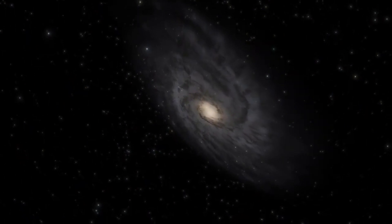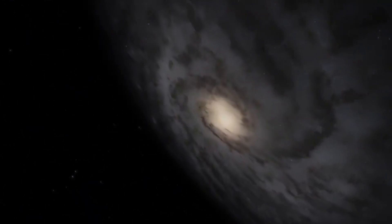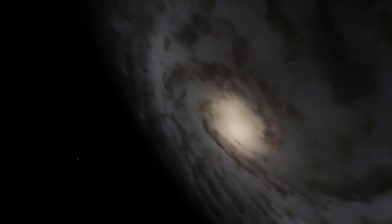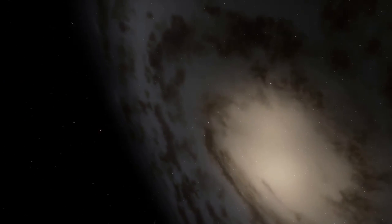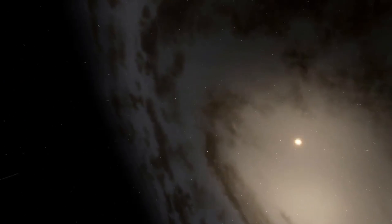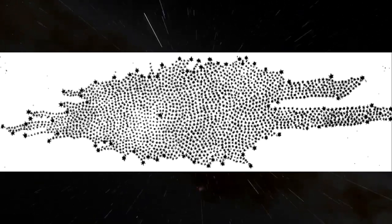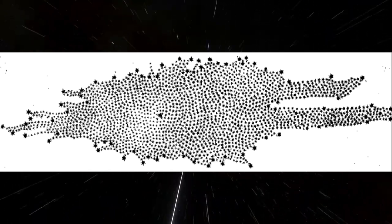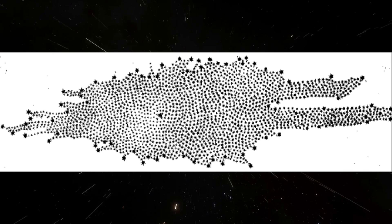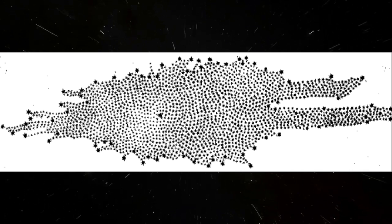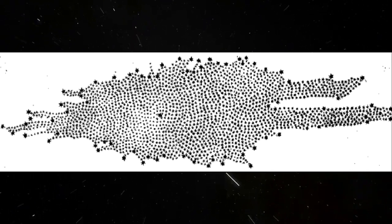Our understanding of our galaxy has changed over time with scientific and technological progress. The first attempt to map our galaxy was made by the famous German-British astronomer William Herschel in 1785. He manually counted the number of visible stars and their distribution in the sky, creating a map of the galaxy with an incorrect shape, placing the Sun in the central region.